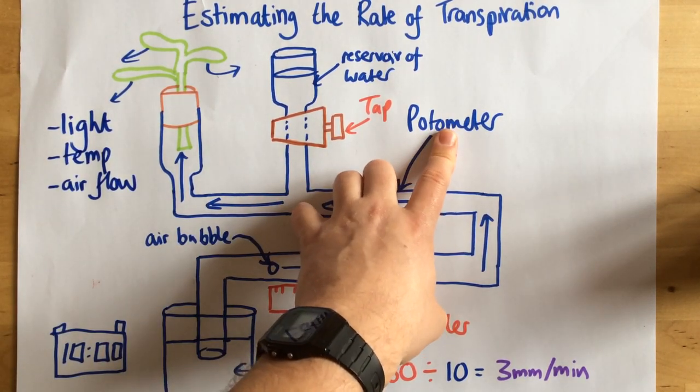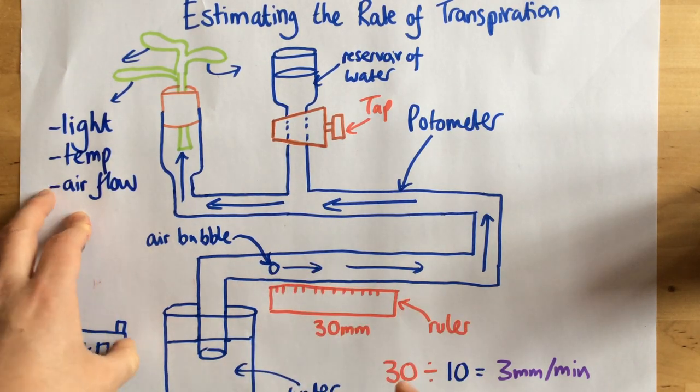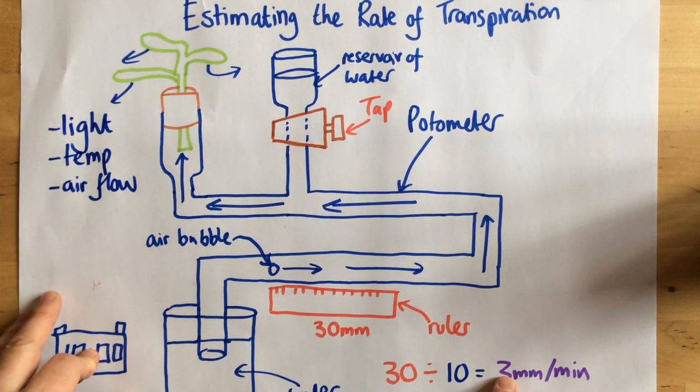The whole piece of equipment is called a potometer, and it's all about seeing how far the air bubble travels over a certain period of time. And right there is my rate of transpiration.